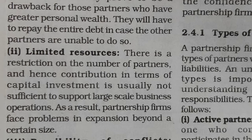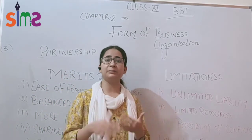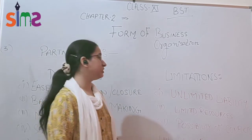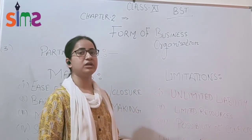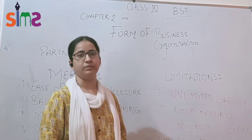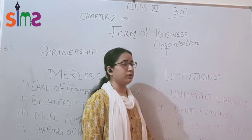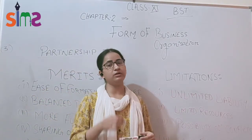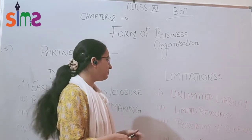Next is the possibility of conflict. We see that in a sole proprietorship, one person is the decision maker, owner, and takes all the risk and profit. But in a partnership firm, when profit, risk, and loss are shared equally among partners, there are also conflicts that can arise among the partners.